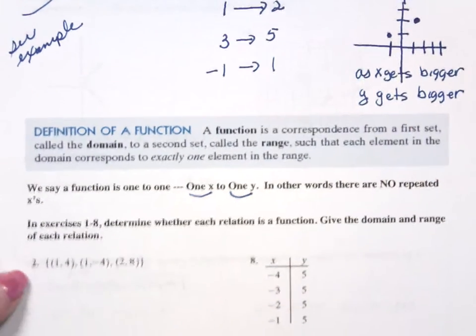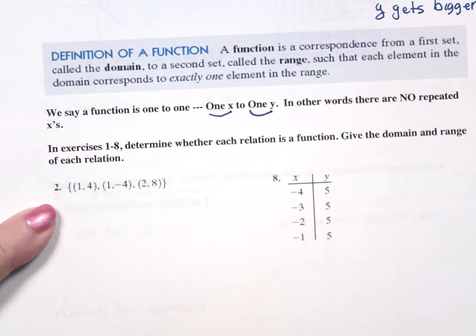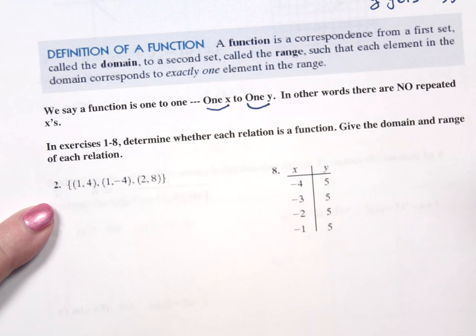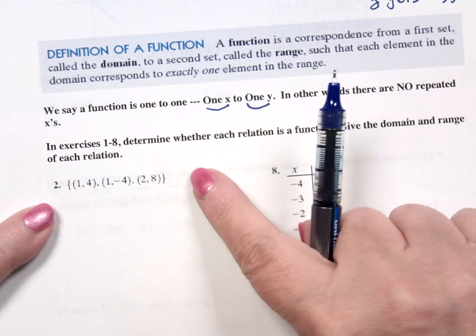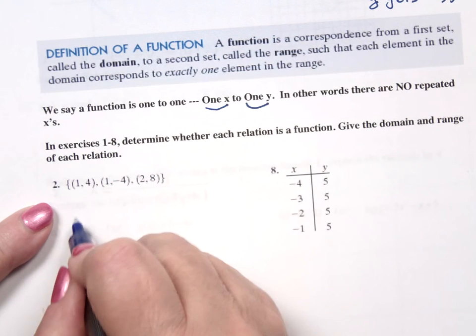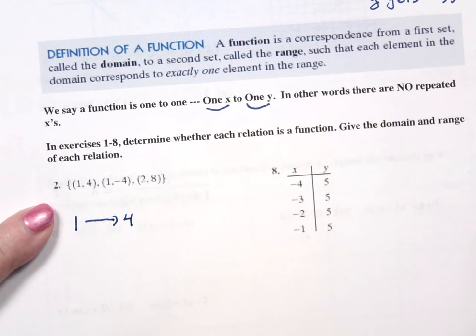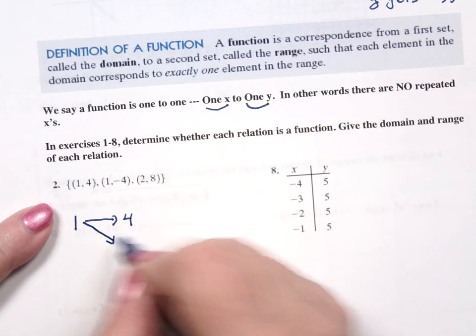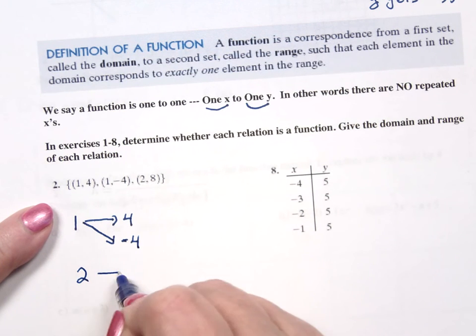So if I were to look at, and these are problems from your packet, this is a set. An easy way to do it is to map it out. This is where I might use a map if I have a set. I know one is related to four. I also know that one looks like is going to be related to negative four. And two is related to eight.